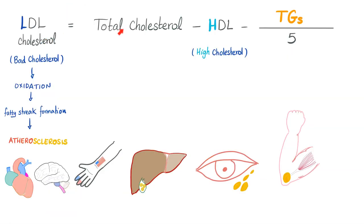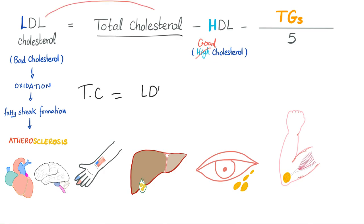LDL cholesterol equals total cholesterol minus HDL minus triglycerides over 5. LDL is low density lipoprotein — that's the bad cholesterol. HDL is high density lipoprotein — that's the good cholesterol. Total cholesterol equals LDL plus HDL plus triglycerides over 5. That's what we mean by total cholesterol: the bad cholesterol plus the good cholesterol plus triglycerides over 5.